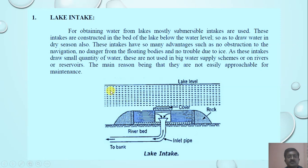In the figure, you can see the lake water level, with a cover provided. This is the inlet pipe — it is a submersible type. There is a covering for protection, and this is the river bed.